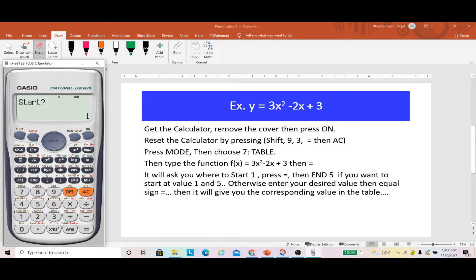The calculator will now ask where do you want to start. If you want to start, for example, from negative 5, and you want to end to positive 5 as your x values, all you've got to do is to press equals, and then press equals again.